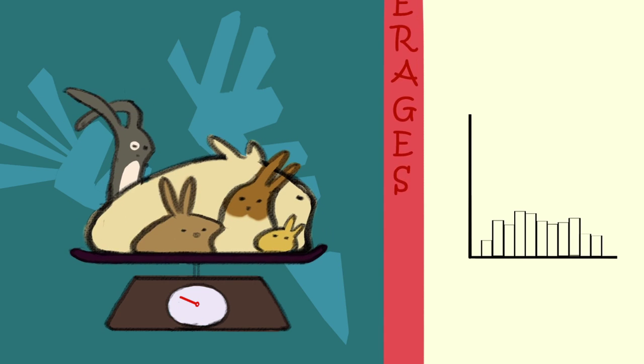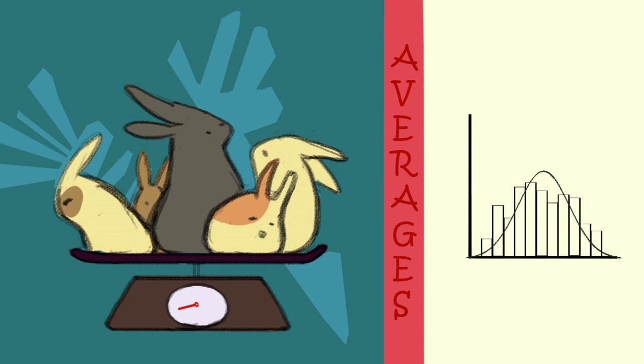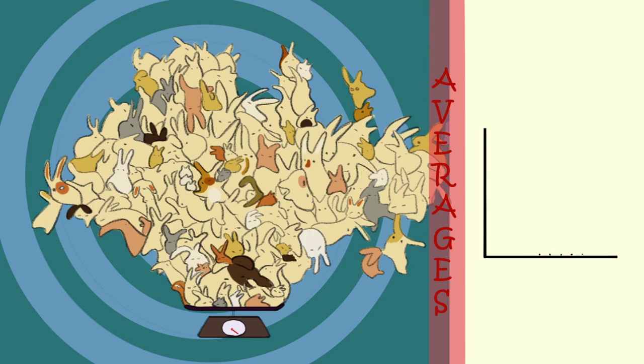He starts by weighing 5 rabbits at a time and he finds that the distribution of the average is somewhat bell-shaped. Then, he increases the sample size by weighing 20 rabbits at a time, and then 100 rabbits at a time.